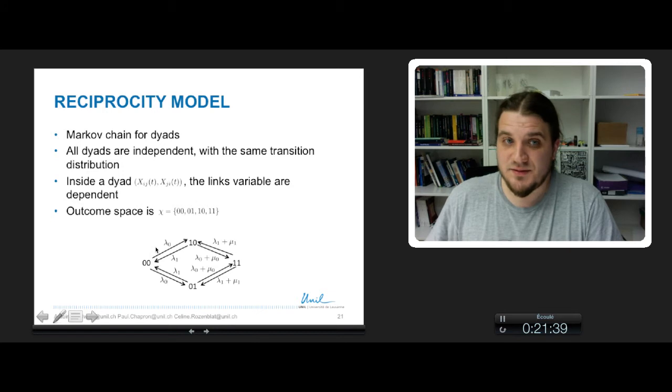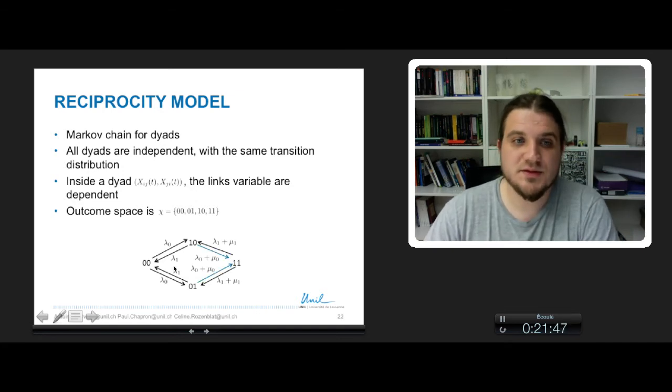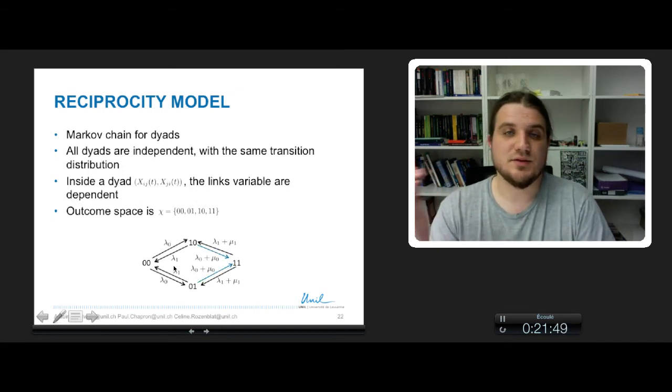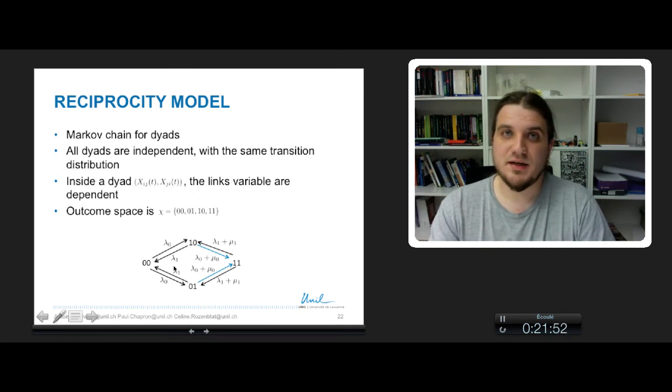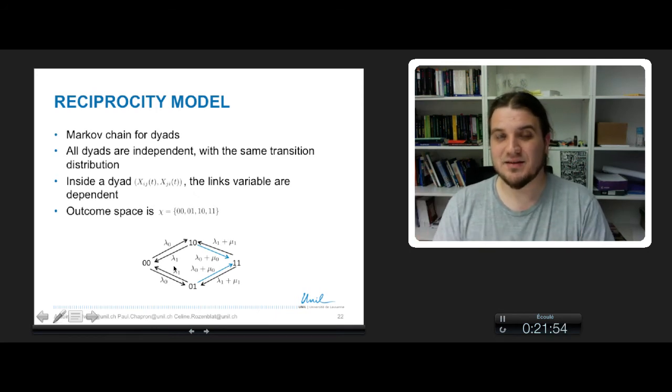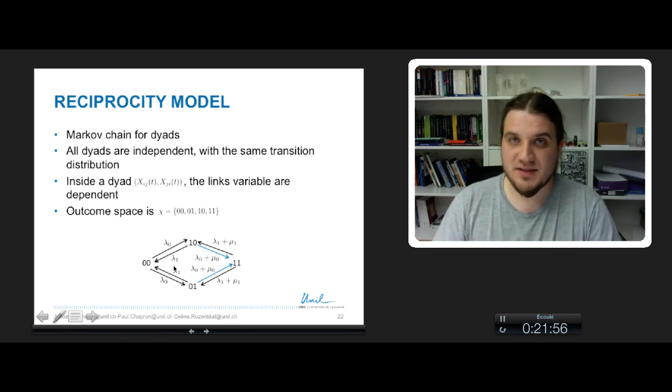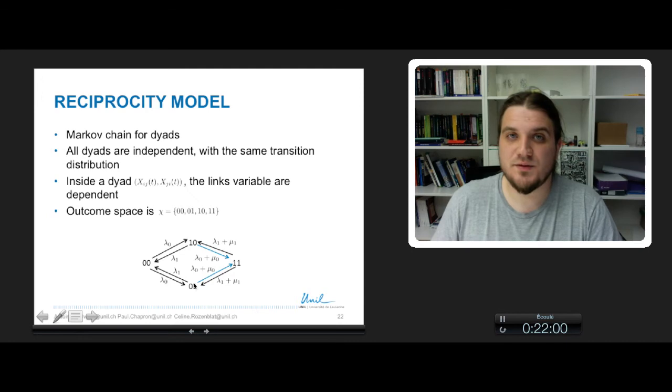This led us to define two more transition rates. The first one to consider is the transition rate that makes the reciprocity complete, that adds the link that was missing. From the state 1 0 or 0 1, if you add the missing link, you arrive in state 1 1, and you have reciprocity between the two nodes.